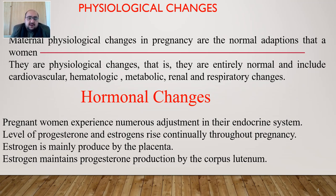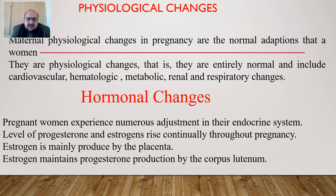Maternal physiological changes during pregnancy are normal adaptations that a woman goes through. Under normal conditions, the body physiology is stable, but during pregnancy a normal adaptation occurs that affects the overall physiology. For example, during pregnancy the hemoglobin level decreases and iron levels decrease. These physiological changes are entirely normal and include cardiovascular and hematological changes.